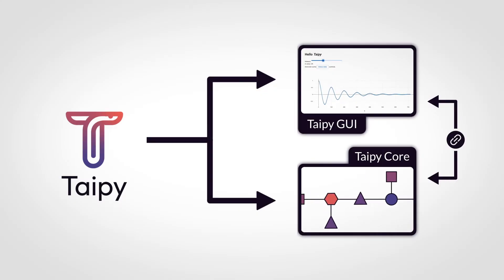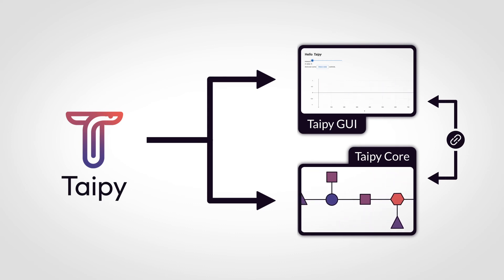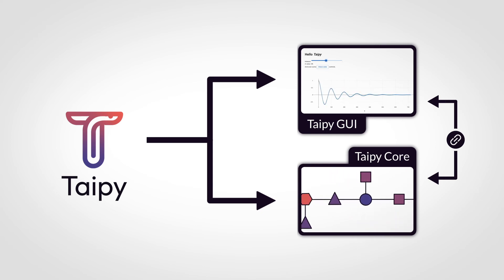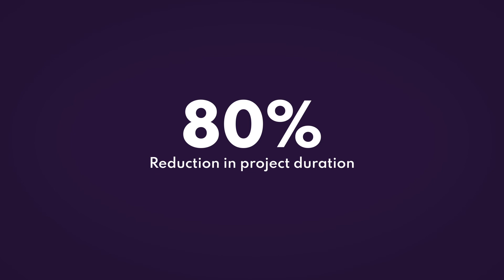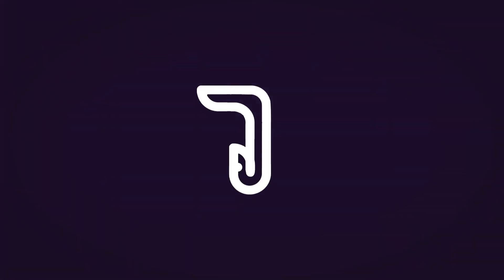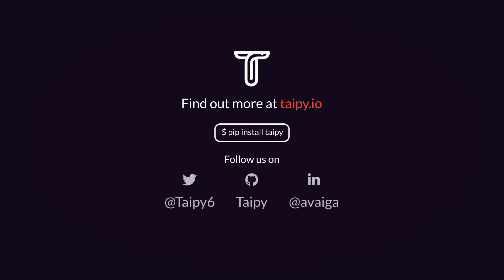Due to the complexity and high production cost to build a functional data-driven web app, it has always been challenging for data scientists to deploy data pilots to end users. Fortunately, it is no longer the case with TypePi. A team of data scientists can now work together within a short amount of time to produce an industry-tailored and fully functional application. Our early partners showed a reduction of 80% in project duration, with just a tenth of the cost to build a similar product in the traditional way. TypePi 1.0 is finally released and can be installed in a few seconds using pip install TypePi.